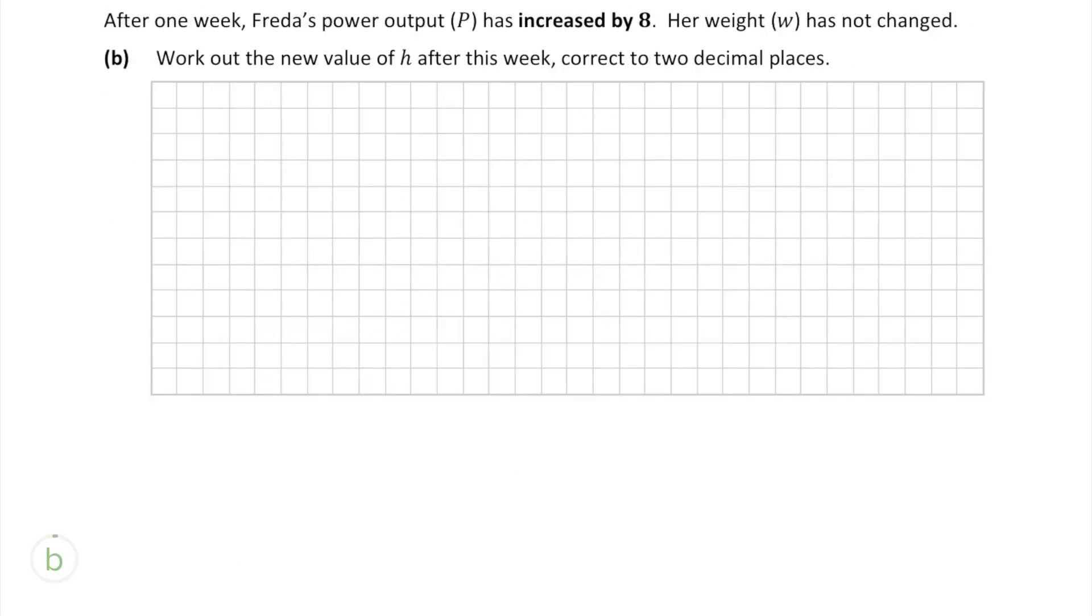In part b, we're told that after one week, Frida's power output increases by 8, but her weight has not changed. Now we need to work out the value of h after the first week, correct to two decimal places.